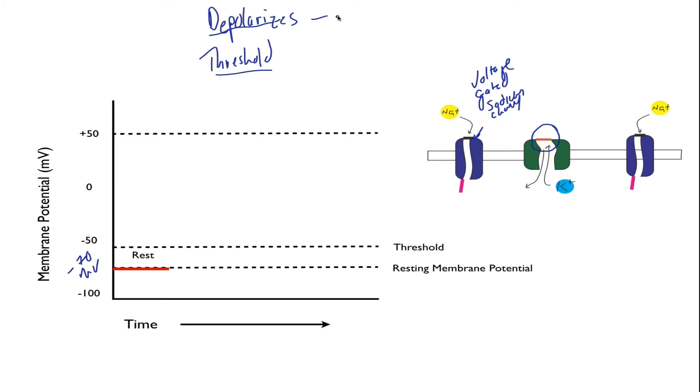To depolarize means to make more positive. Make what more positive? The membrane potential. So depolarization is to make the membrane potential more positive. And threshold is the membrane potential where an action potential is inevitable. So you're going to get an action potential, no matter what. It's an all-or-nothing event. So with this knowledge, let's begin moving through the action potential.